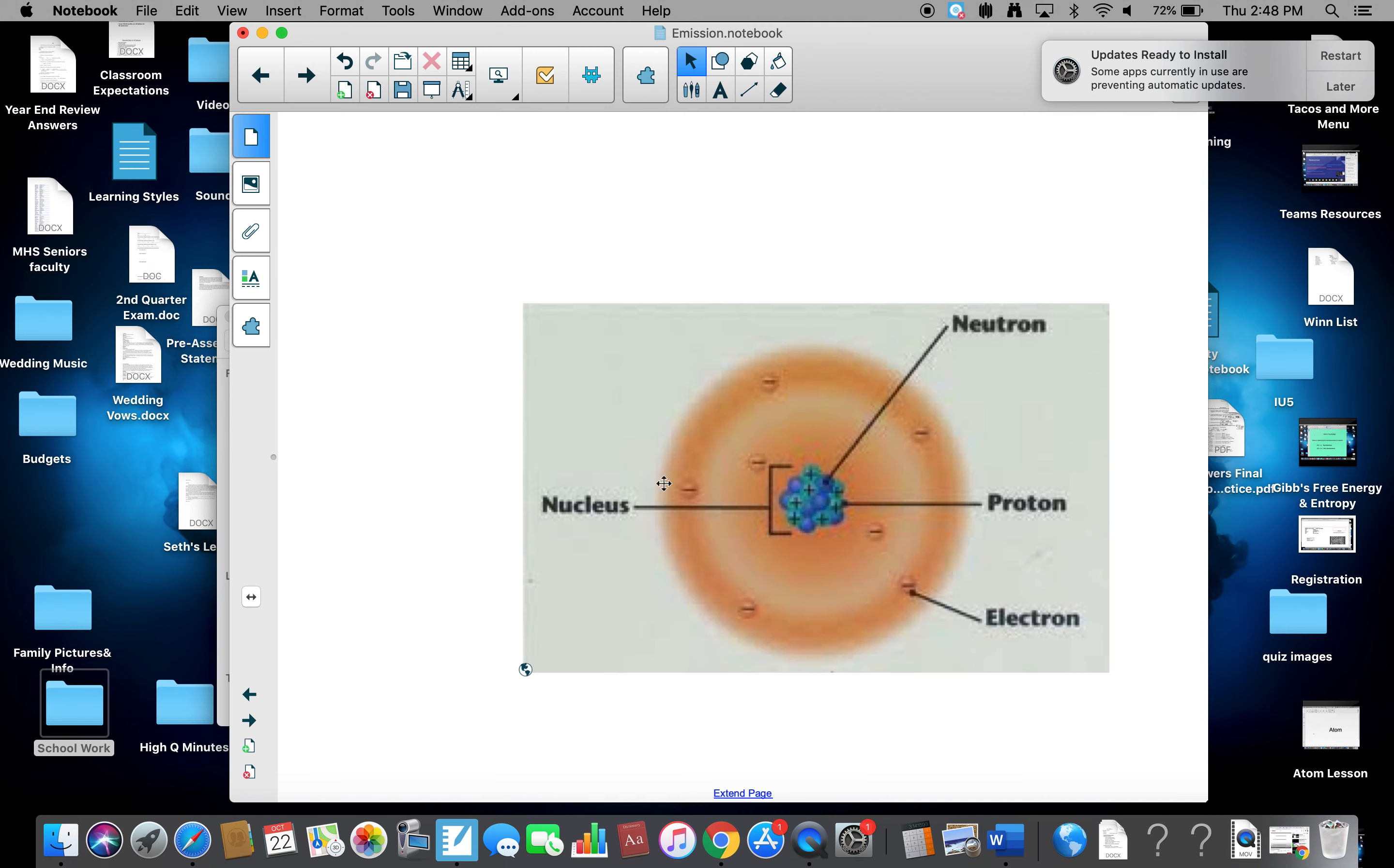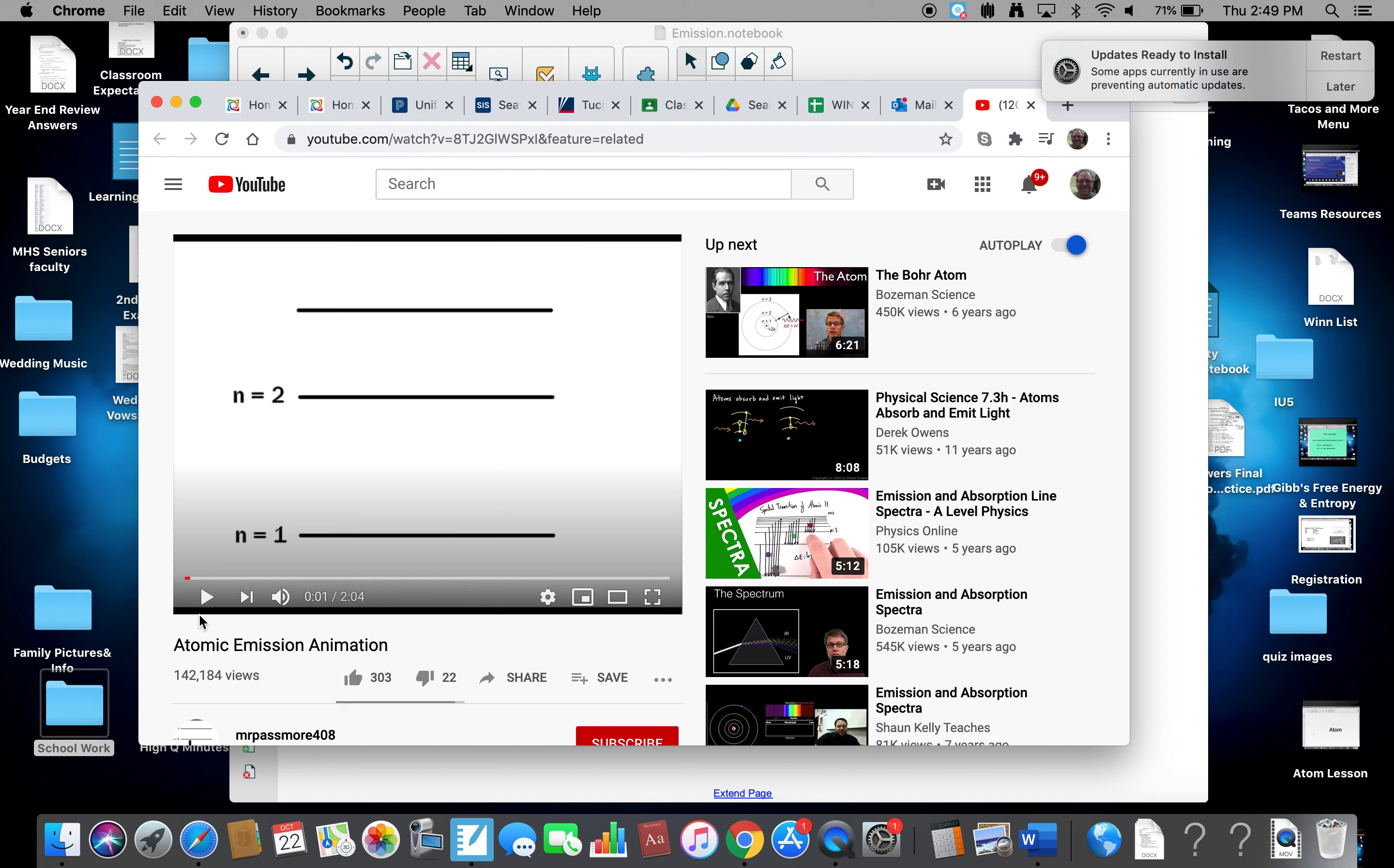So we look at our atom. We know our protons and neutrons. We have the electrons in the cloud. How do we know where they're arranged at? Well, here's a little quick video that explains the process.